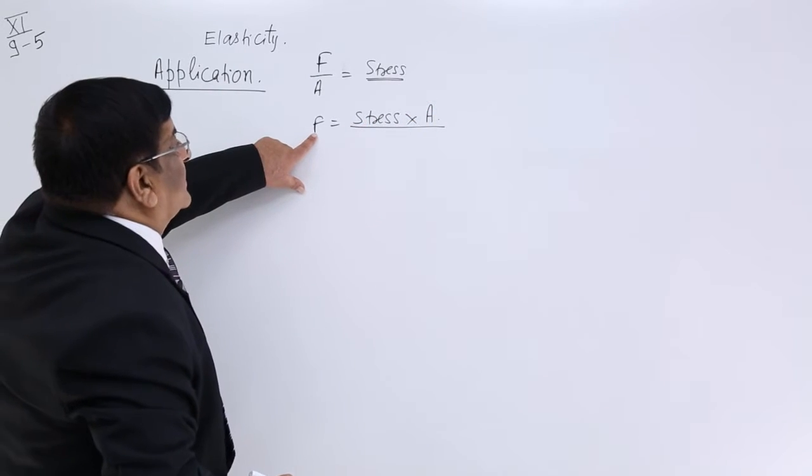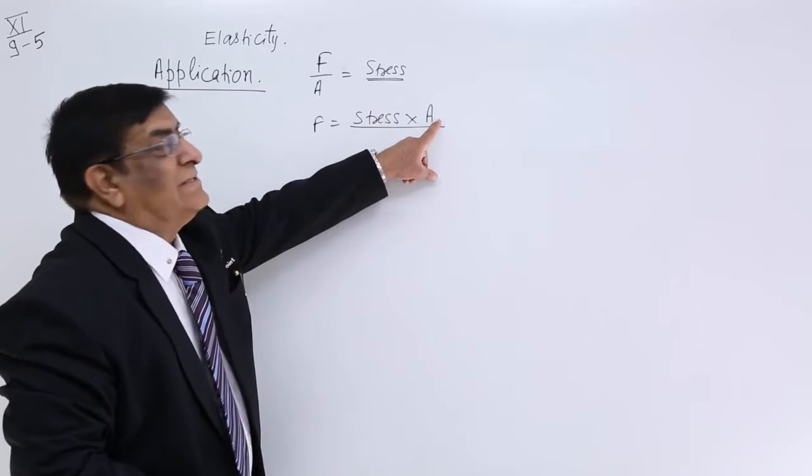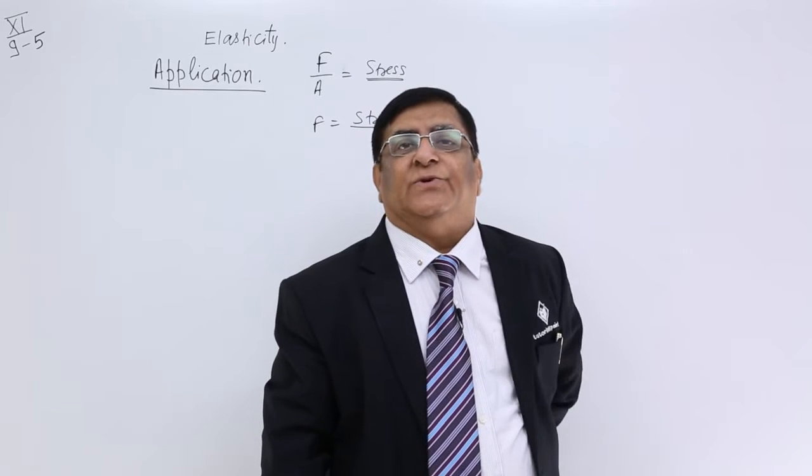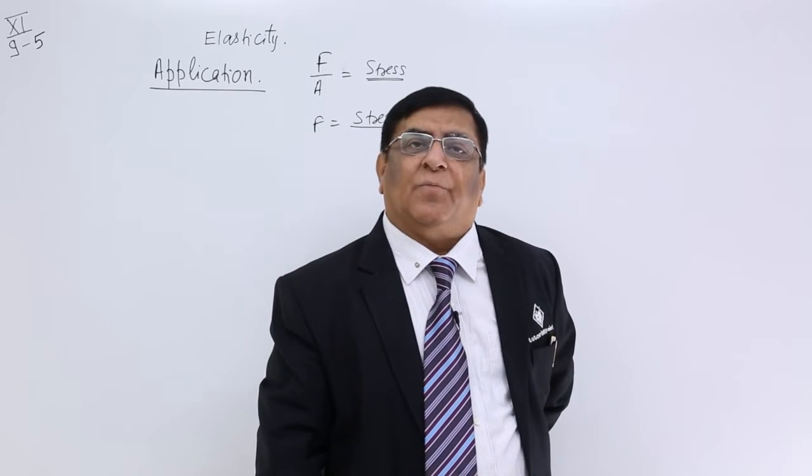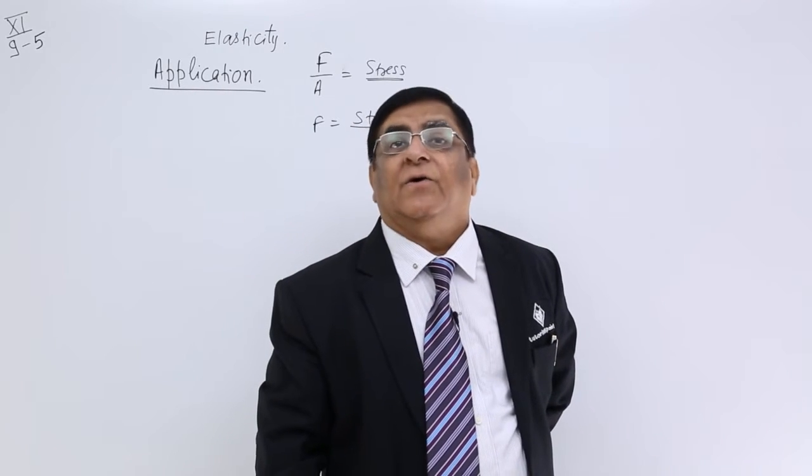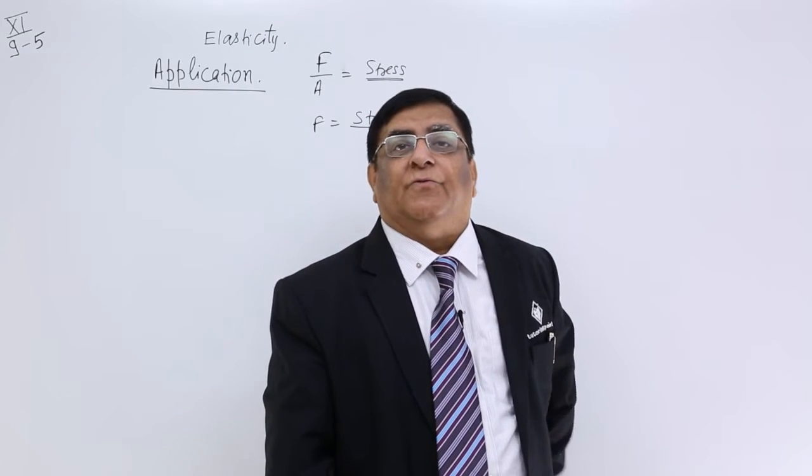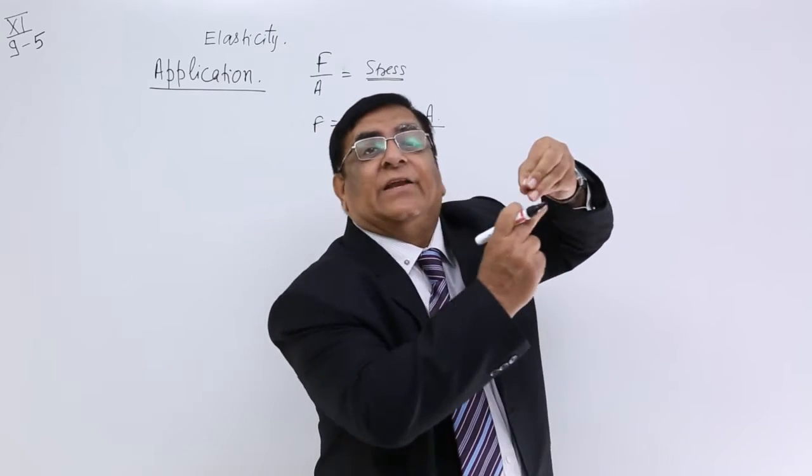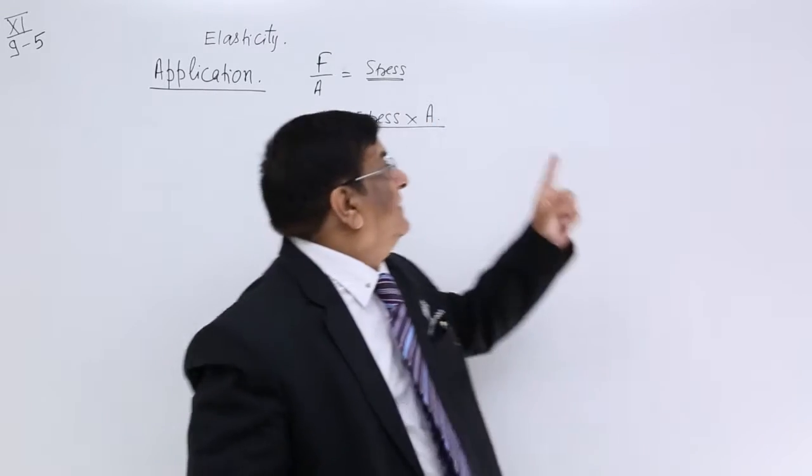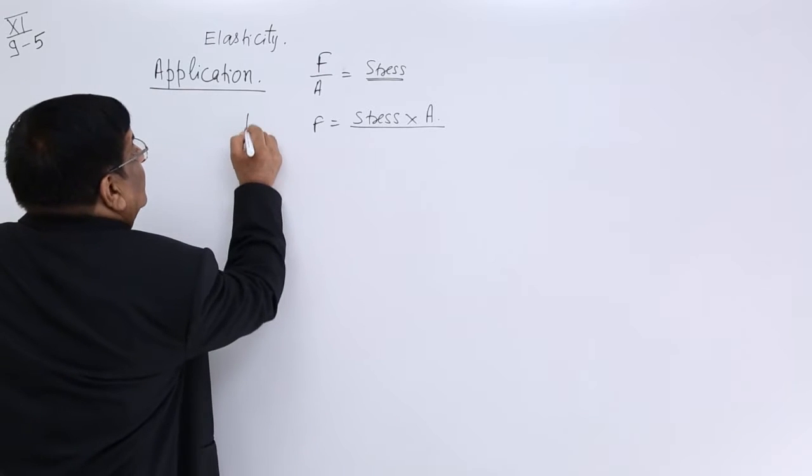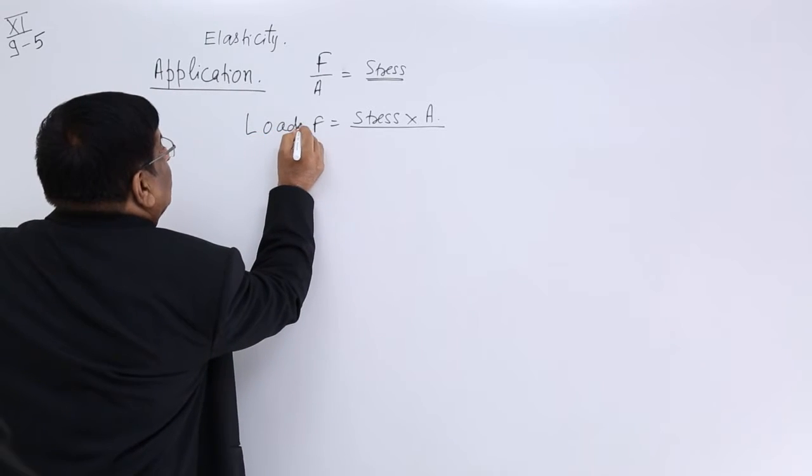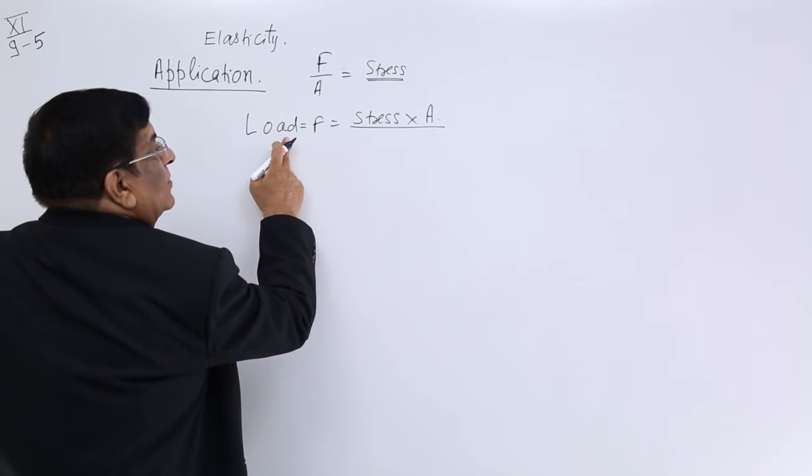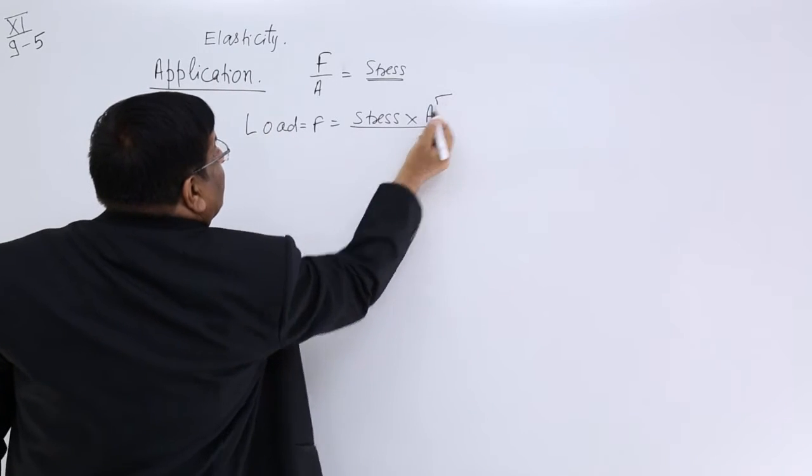So if our applied force is larger, we should increase the area. Suppose for a steel, the stress value is 200 and we have to apply the force of 1000, what we will do? We will use 5 ropes and put them together, increase the area 5 times. Then the load or the force, we can use 5 times.